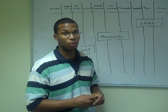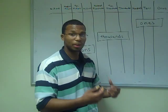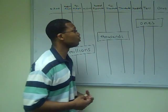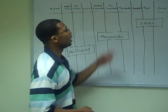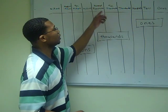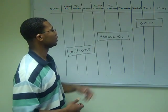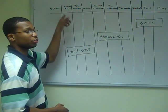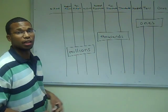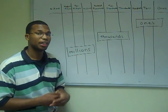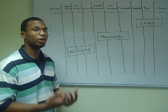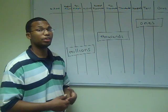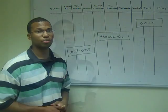For example, the ones group starts out with just the plain ones, tens, and hundreds. In the thousands group, it has 1,000, 10,000, and 100,000. In the millions group, 1 million, 10 million, 100 million, et cetera. The next group after the millions group would be the billions group, and after the billions group would be the trillions group.